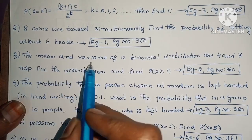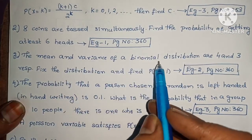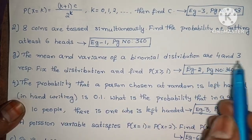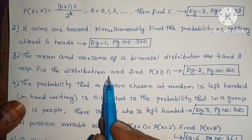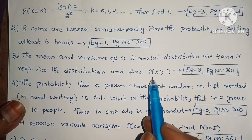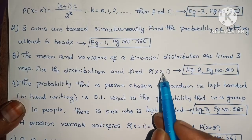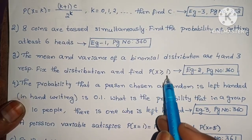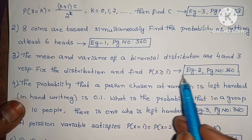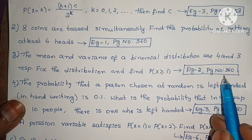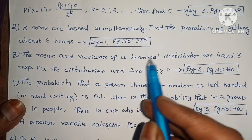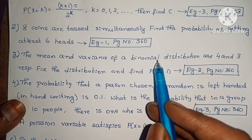The mean and variance of a Binomial Distribution are 4 and 3 respectively. Fix the distribution and find P of x greater than or equal to 1. Example 2, page number 360. This is very important.